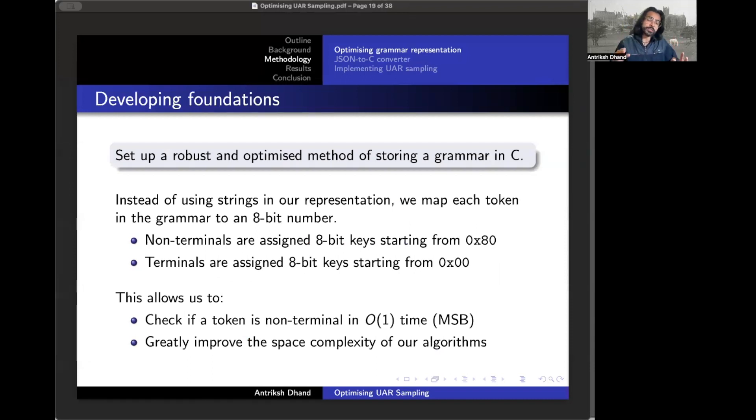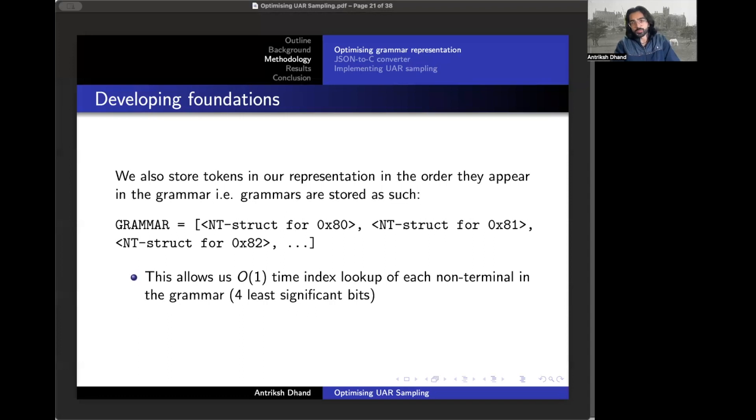So we chose our language. Now we need to think about how we wanted to represent grammars in that language. We could have just stuck with working with strings, but strings are variable length and they also bring with them really slow string operations like string compare. So instead of that, we mapped each token in the grammar to an 8-bit number. And what this allowed us to do was firstly save a whole lot of space and a whole lot of expensive memory allocations. It also allowed us some really neat optimizations. For example, we can check if a token is non-terminal just by checking its most significant bit. Another smart optimization was to store the tokens in the same order that they appear in the grammar. This way, the index of the rule in the grammar was just the four least significant bits of the rule's token.